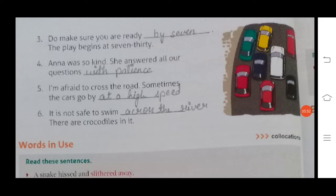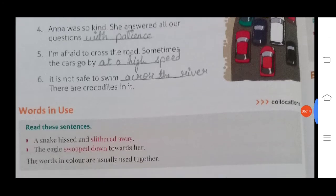Number four: Anna was so kind, she answered all our questions with patience. Number five: I am afraid to cross the road sometimes, the cars go by at a high speed. Number six: it is not safe to swim across the river, there are crocodiles in it.